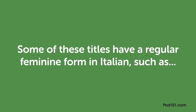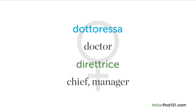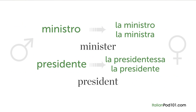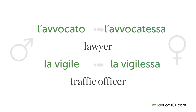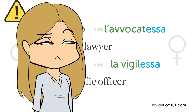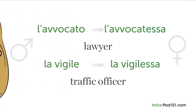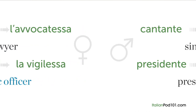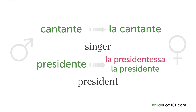Some of these titles have a regular feminine form in Italian, such as 'dottoressa' or 'direttrice.' But for titles almost never used for women historically — like 'ministro' or 'presidente' — it can be 'la ministro' or 'la ministra,' 'la presidentessa' or 'la presidente.' Some professions have a feminine ending in -essa, but this form is often considered ironic or derogatory. For example, it would be better to say 'l'avvocato' instead of 'l'avvocatessa.'